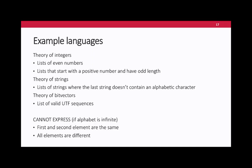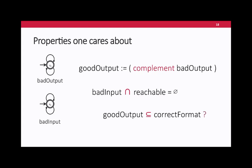An important part is what symbolic automata cannot do. There is often confusion: symbolic automata are not like Turing machines. These predicates are used in a restricted fashion. For example, I cannot check that the first and second elements of a list are the same — there is no way to compare things at different positions. I cannot enforce that all elements are different. These properties that you want from automata include closure under Boolean operations, decidable equivalence, and so on.